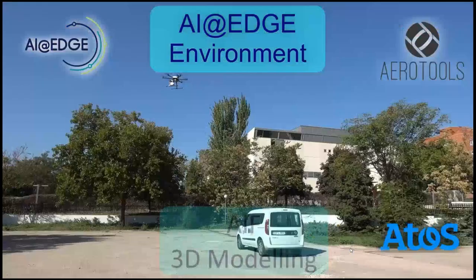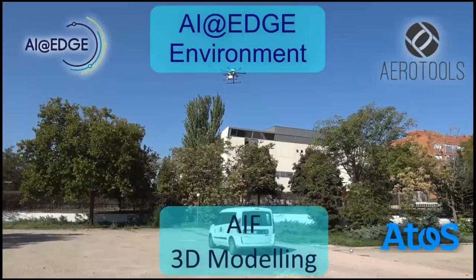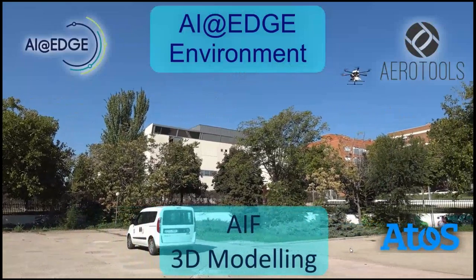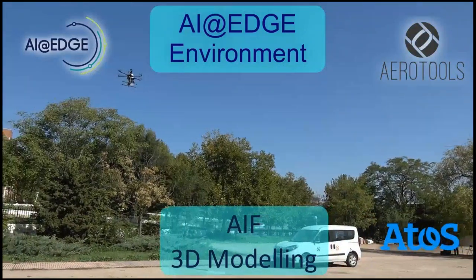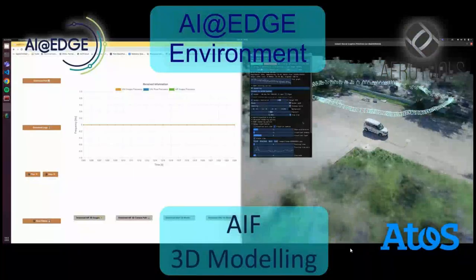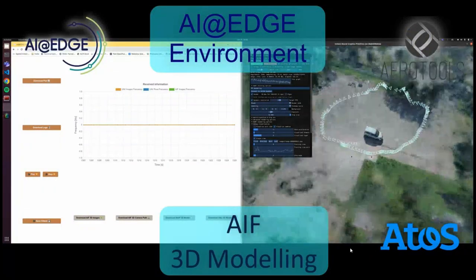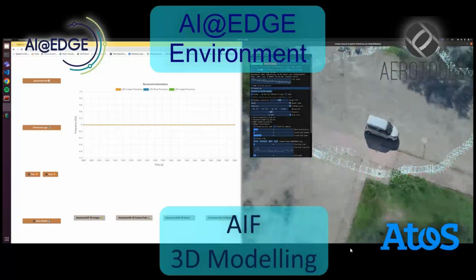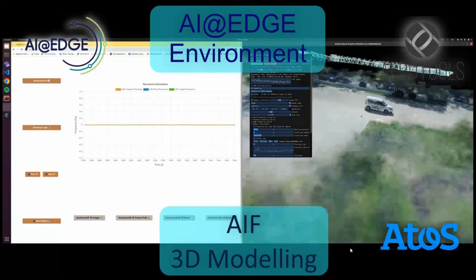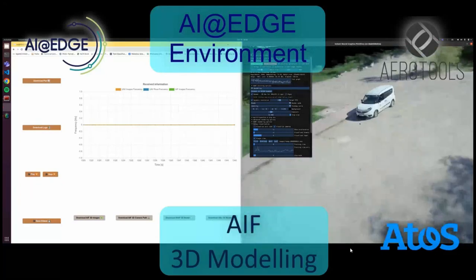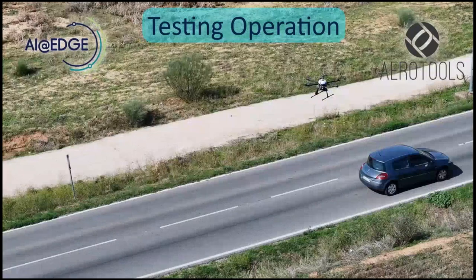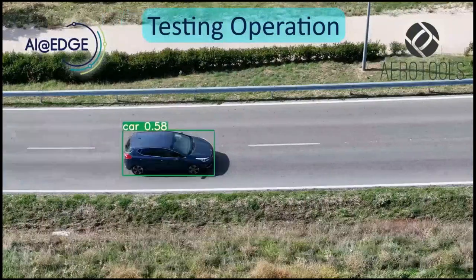Once the anomaly detection detected an incident, we can run the 3D reconstruction or modeling functions, performing a point-of-interest flight for the drone and taking pictures of the area. You can see here where the pictures are taken and the model environment where we can detect and locate the incident.